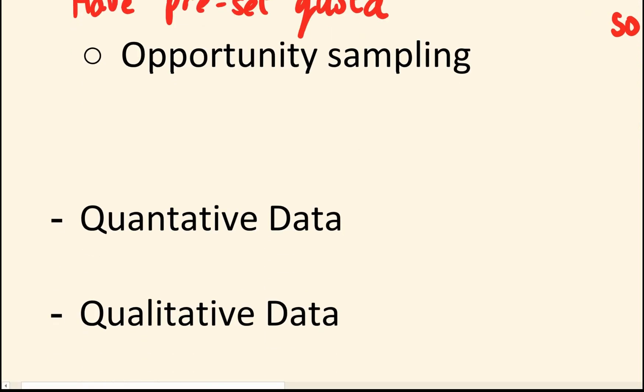Last one, the nice easy one is opportunity sampling. So the example is always given. Say you want to interview some people at a supermarket, you turn up 9am, interview the first 10 people you see and then go home. That is opportunity sampling. So it's basically whatever is convenient.